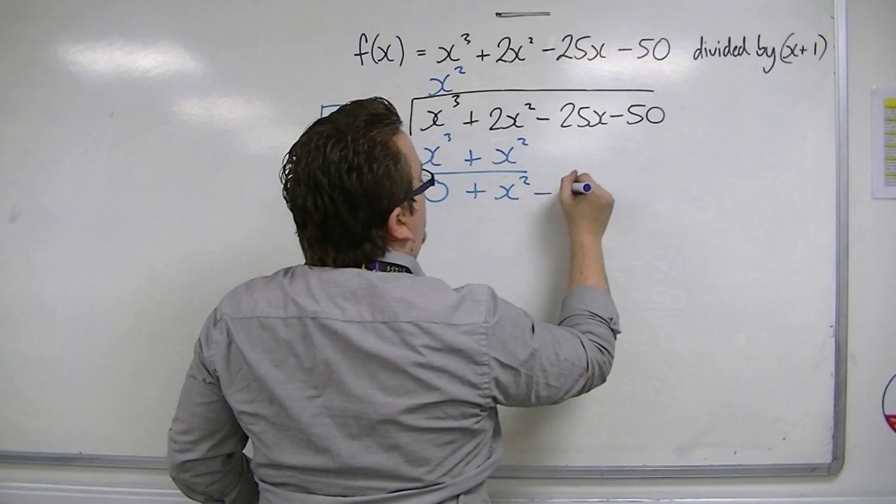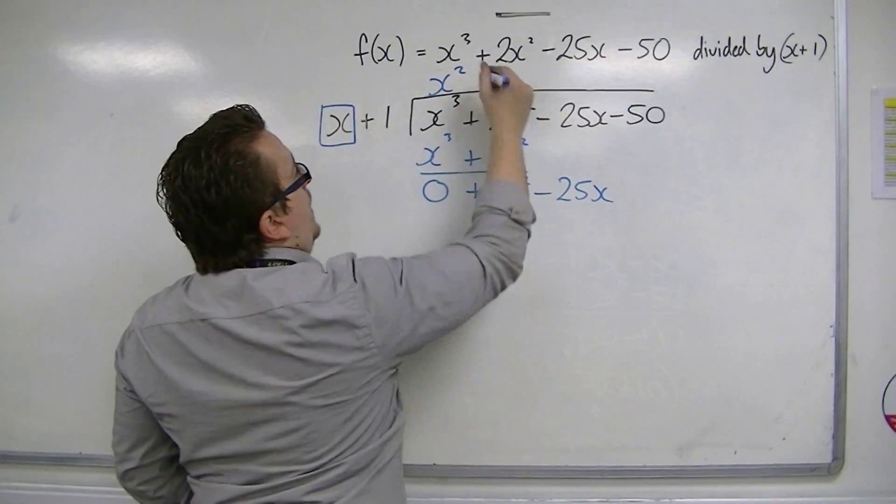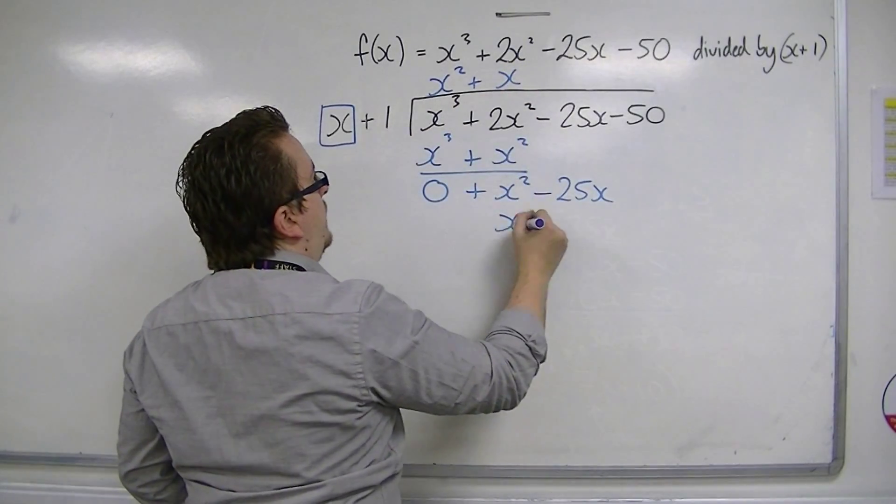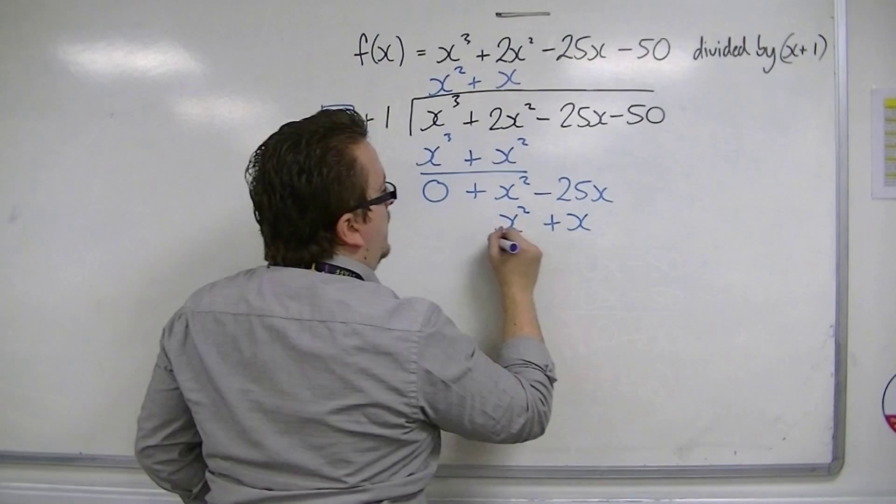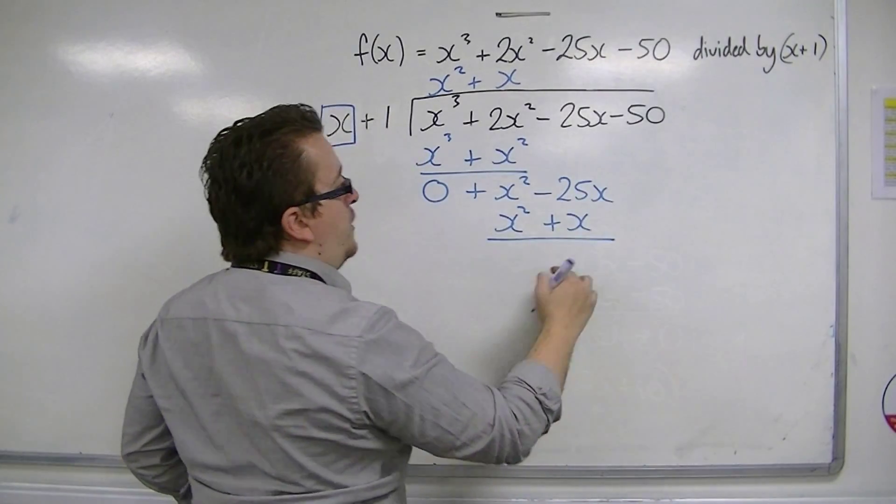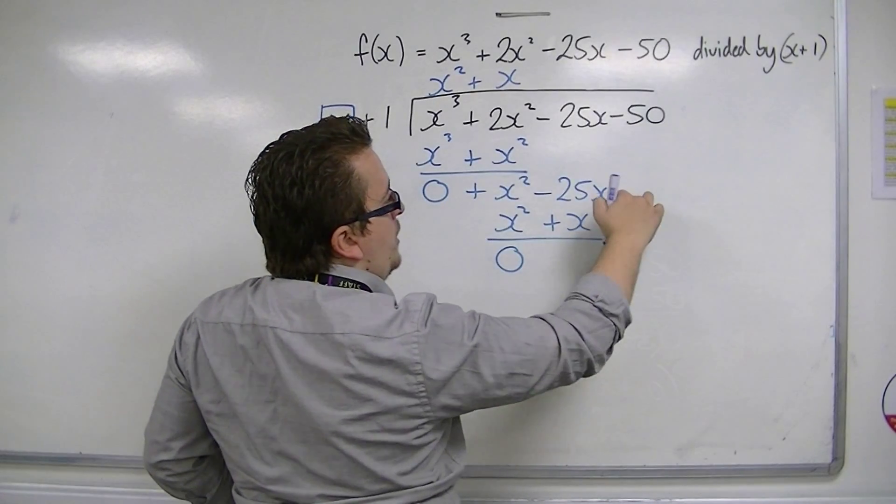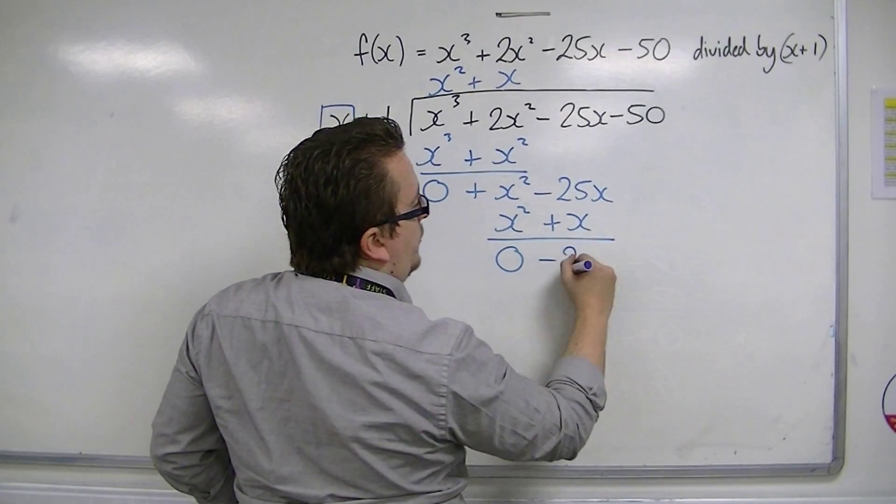Bring down the next term. x's into x squared goes x. x times these two terms is x squared plus x. Draw a line, perform the subtraction: x squared take away x squared is 0, minus 25x take away x is minus 26x.